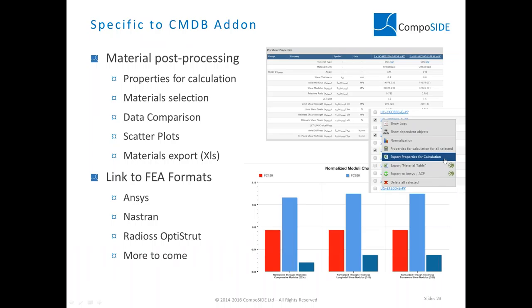Specific to the CMDB add-on, we have advanced material post-processing: looking at properties for calculations, material selection through scatter plots, data comparison and normalization graphs, material data export to Excel, and use as a centralized database feeding high-end non-linear FEA tools such as ANSYS, NASTRAN, RADIUS, and Optistruct — with more integrations to come in the coming months.